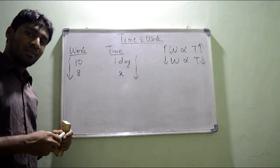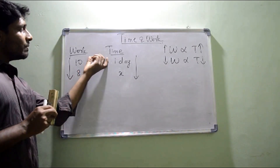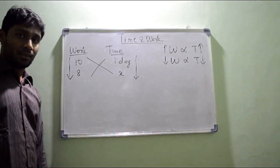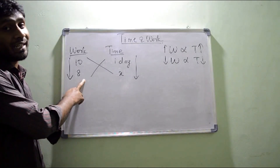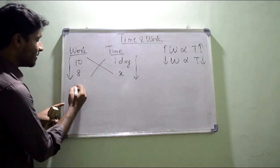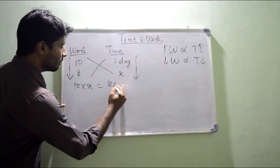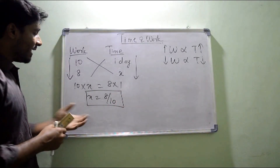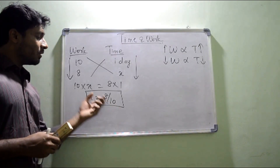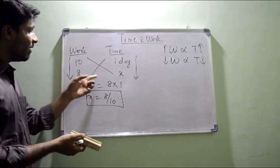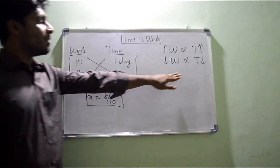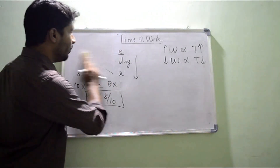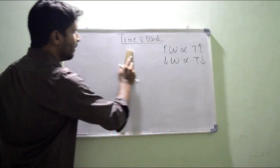Remember: if any two objects vary in direct proportion, always do cross multiplication. For example, 10 × x = 8 × 1, so x = 8/10 = 4/5 days. That's the answer — I will take four-fifths of a day to complete the remaining work. When in direct proportion, always go for cross multiplication — that's what you do for this entire topic.